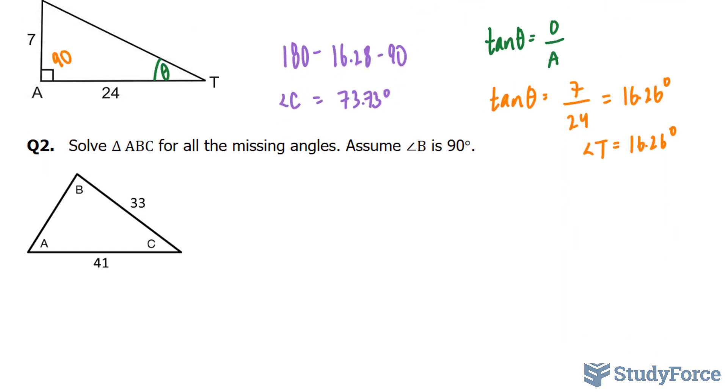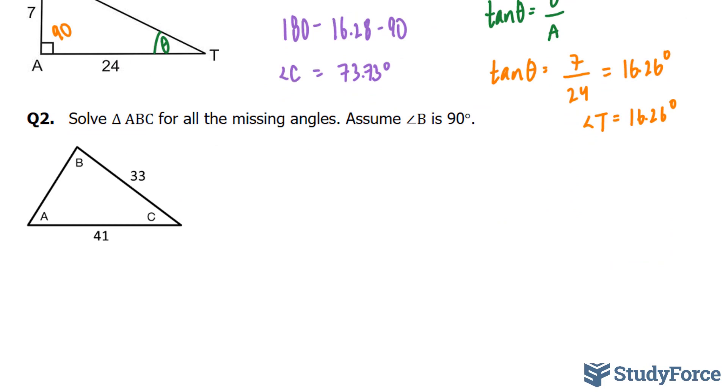Let's move on to question two. In question two, they're asking us to solve the triangle ABC for all the missing angles. And we have to assume that angle B is 90 degrees. So I'm just going to put a square that represents the 90 degrees there. Once again, you have to choose between either A and C as your reference. And it's totally random. You can choose either A or C. It doesn't really matter. I'm going to choose A.